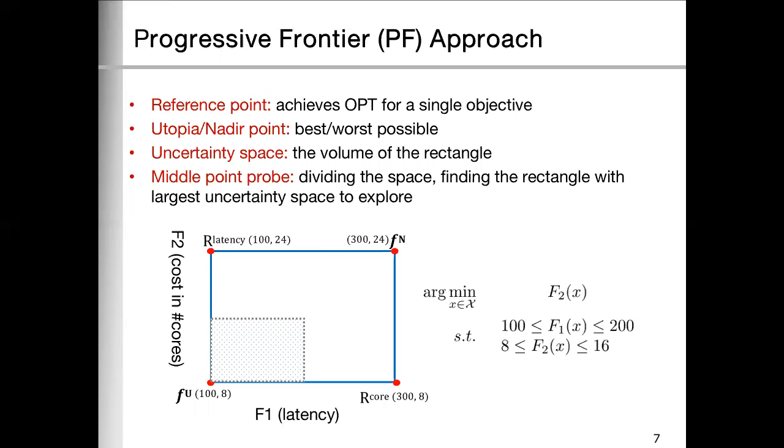Then we have the constrained optimization problem, which means we use the middle point probe. After that, we construct this constraint optimization problem, which we want to find the best cost performance given these two constraints. And after solving it, we have the point F1.